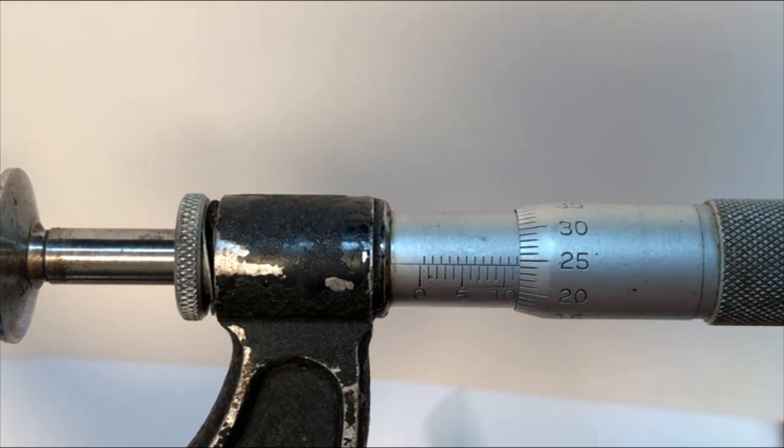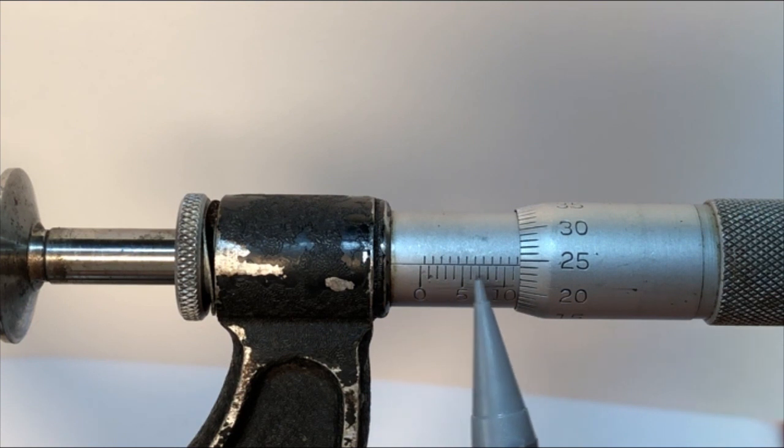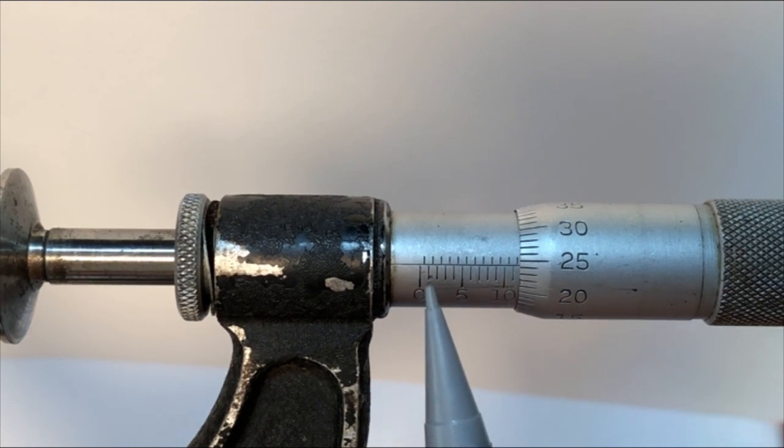So let's take a look here. Along this side are millimeters. So from here to here is a millimeter. From here to here is a millimeter. We got five, we got 10, we got 11 and some.